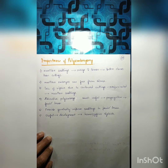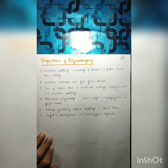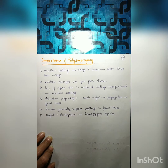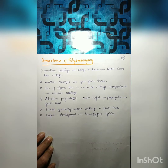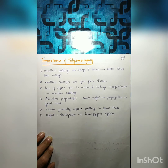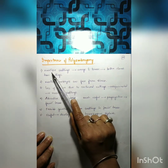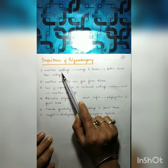The nucellar layer is also producing embryos, giving rise to polyembryony. Polyembryony due to nucellar cells means those seeds will be called nucellar seedlings.